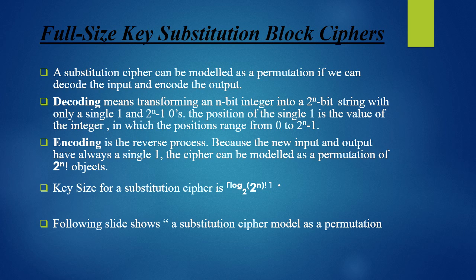Now let's explain further. We have a new input of size 2^n with a single 1. Generating a ciphertext involves only repositioning this 1 to create a new number of size 2^n, so it is nothing but a permutation. Thus the cipher can be modeled as a permutation of 2^n-factorial objects. This makes the size of our key log base 2 of (2^n-factorial) bits, because we need a key that can give us all possible outputs.